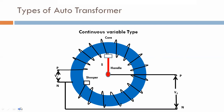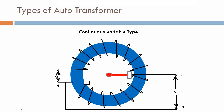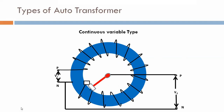Step by step we understand the working. The handle moves on this winding and covers the overall winding. This is the stopper point at the final end. So the total V2 voltage we are getting from that particular scenario — from the starting end of the winding to the final end — this is the continuous variable type auto transformer.